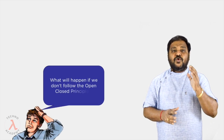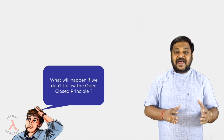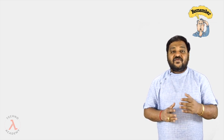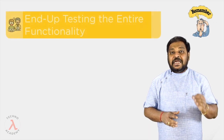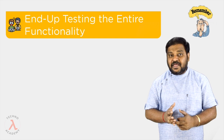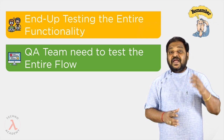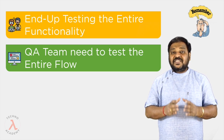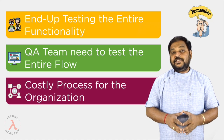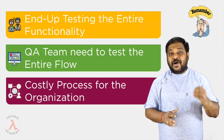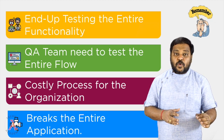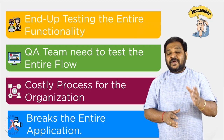What will happen if we don't follow the open-closed principle at the time of requirement enhancements? If we keep updating existing class definitions by adding or modifying functionality, we will end up testing the entire functionality repeatedly. We also need to specify the scope of changes to the QA team every time, and since the time to perform these activities increases, it becomes a costly process. Additionally, modifying existing code might break down the entire application if there are lots of dependencies.